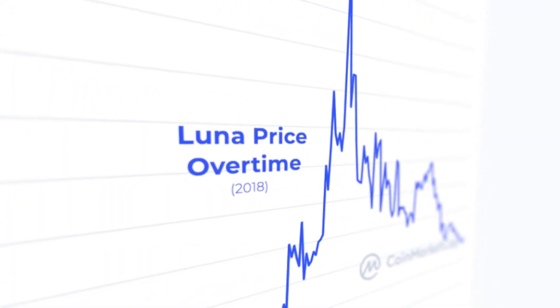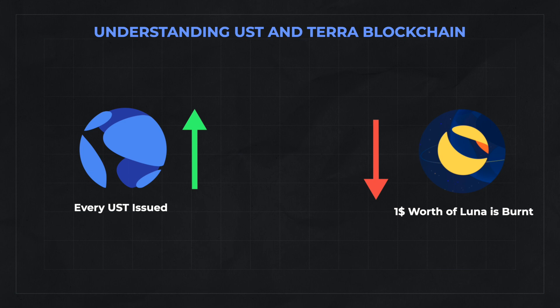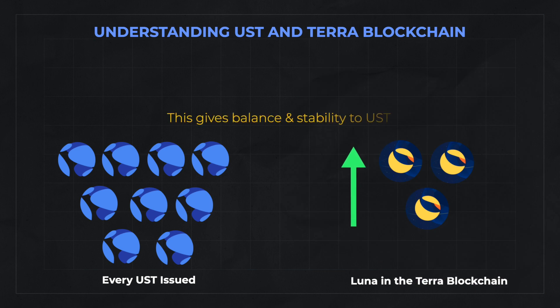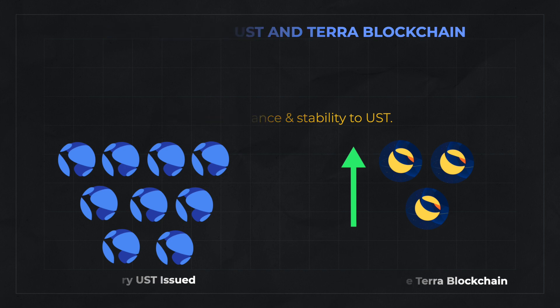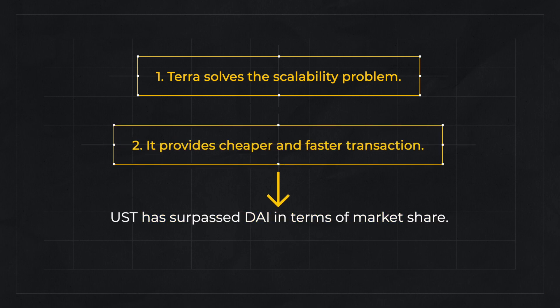Coming back to UST: for every new UST that is issued, $1 worth of LUNA is burned — algorithmically and completely decentralized. As more and more UST is issued, more and more LUNA is burned, and the value of existing LUNA increases. This gives balance and stability to UST. Terra solves the problem of scalability and offers cheaper and faster transactions — this is why UST has already surpassed DAI in terms of market share.